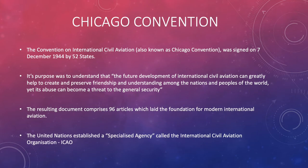The document itself comprised 96 separate articles which made the foundation of modern international aviation. Even nowadays these standard practices remain in place and they form how countries operate their industry and the rules of the air. The United Nations established a special agency called the International Civil Aviation Organization, also known as ICAO, which we're going to look at on the next slide.